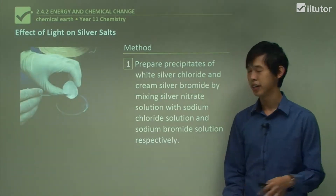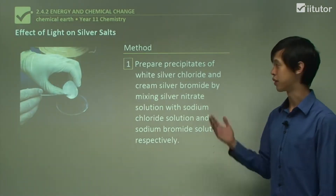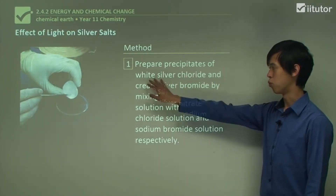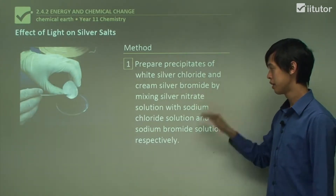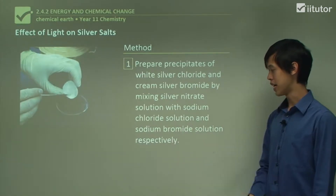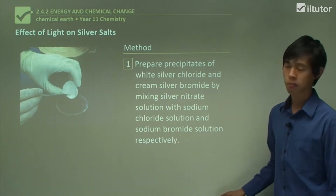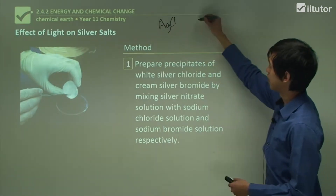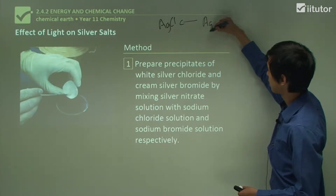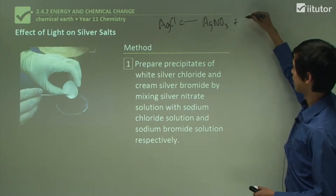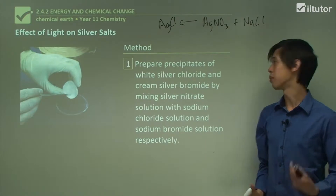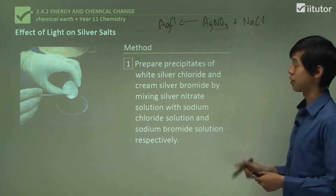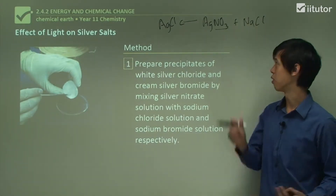The method we're going to use: first we prepare precipitates of the white silver chloride and the cream-coloured silver bromide by mixing silver nitrate with sodium chloride and sodium bromide solutions. We'll quickly check our solubility rules here. Nitrates are all soluble, which means that won't precipitate with anything.